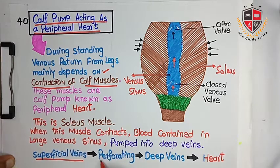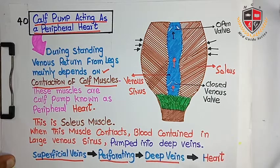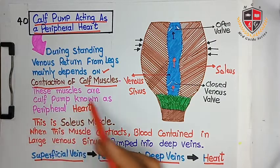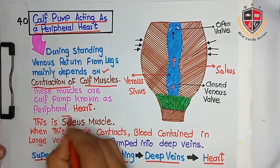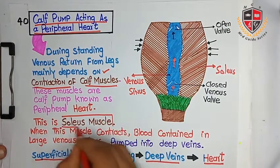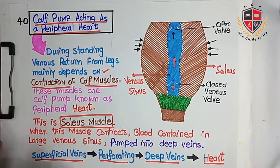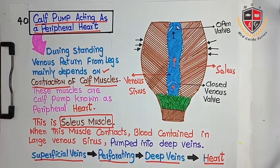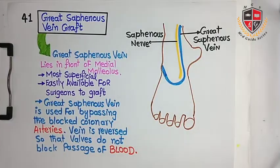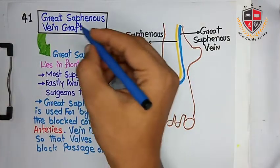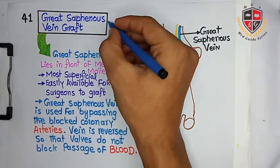The direction of blood flow is from superficial veins toward deep veins and then to the heart. The soleus muscle is known as the peripheral heart. This is the calf pump acting as a peripheral heart.